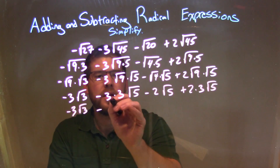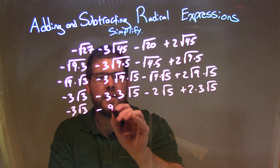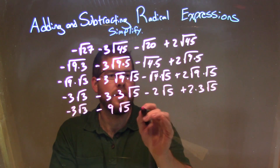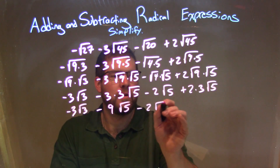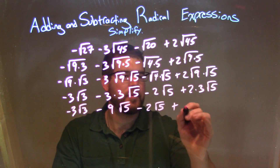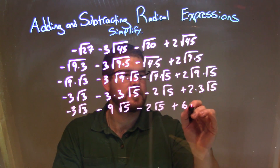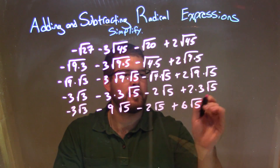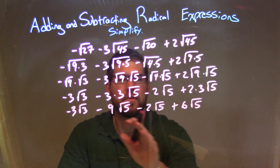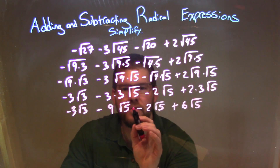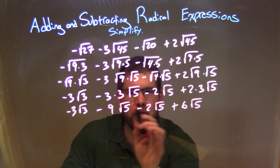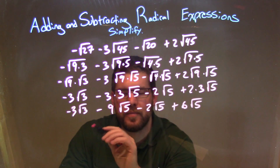Let's bring that down. 3 times 3 is 9, so minus 9 square root of 5, minus 2 square root of 5, plus 2 times 3 is 6 square root of 5. So now we want to combine all the ones with the same square root of 5 — and it's these 3 right here: square root of 5, square root of 5, square root of 5.